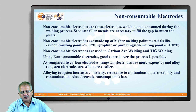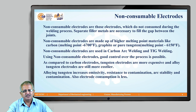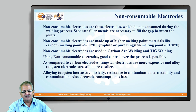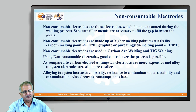Non-consumable electrodes are those which are not consumed during the welding process, so a separate filler material is required to fill the joint. These non-consumable electrodes are made up of high melting point materials — for example, carbon electrodes, graphite electrodes, or pure tungsten electrodes. These non-consumable electrodes give good control over the process.